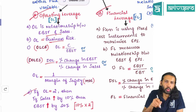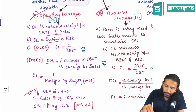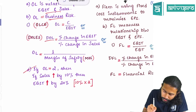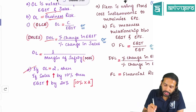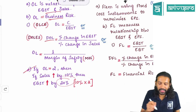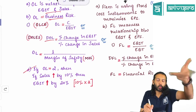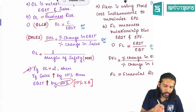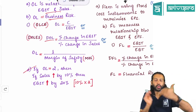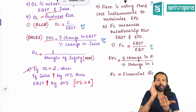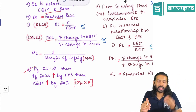What does operating leverage denote? If operating leverage is 2, it means if sales increase by 10%, then EBIT will increase by twice that amount — which is 20%. That is the relationship between sales and EBIT which operating leverage measures.